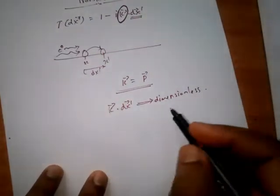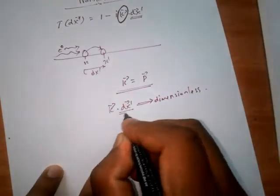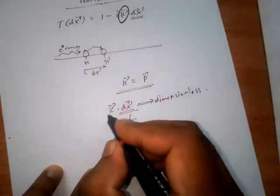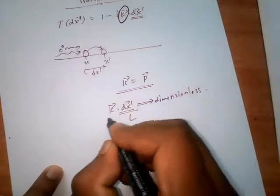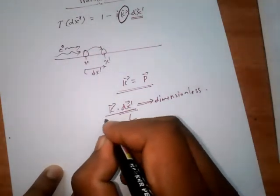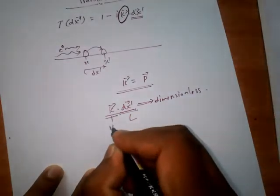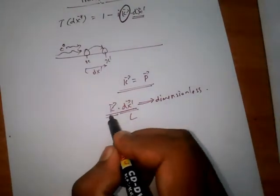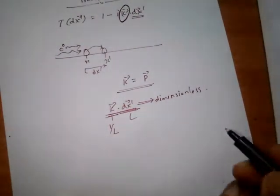If this quantity should be dimensionless, this is in the dimension of length. So for this whole quantity to be dimensionless, this should be in the dimension of one by length. Then only this whole will be dimensionless.